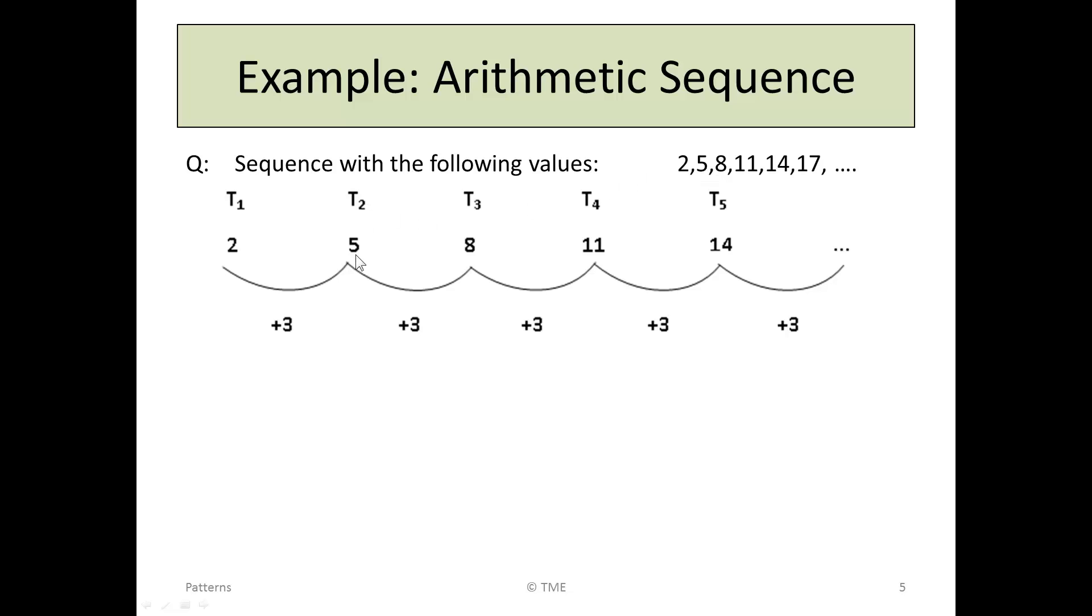term 1 in the sequence, and we give that the number 2, as in the list. Term 2 becomes 5, then 8, then 11. We just transcribe the terms as we have done.